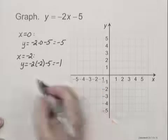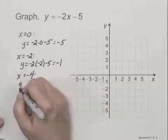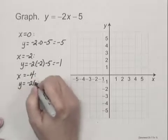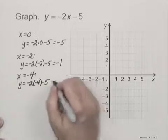And then one more. When x equals negative 4, we have y equals negative 2 times negative 4 minus 5, which is 8 minus 5, which is 3.